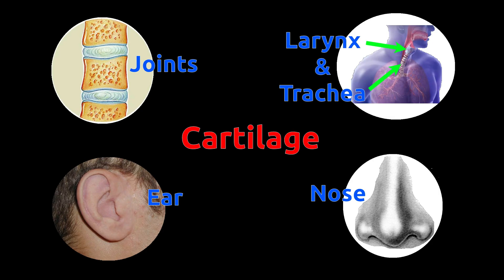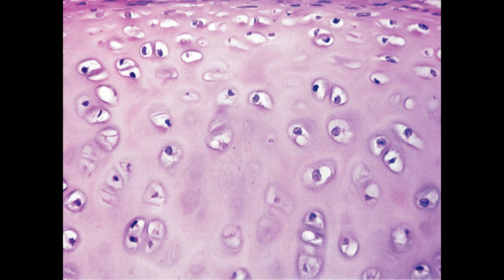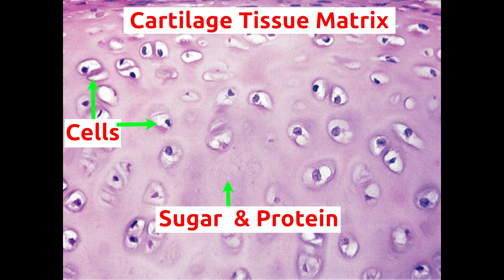Cartilage tissue is present in the nose, ear, larynx, trachea, and at bone joints. Cells in cartilage tissue are widely spaced, and the space around cells is solid and filled with protein and sugars.